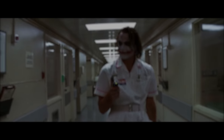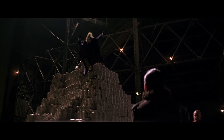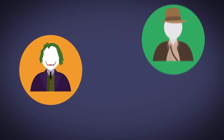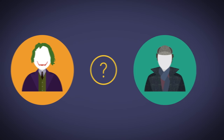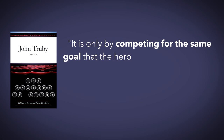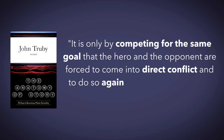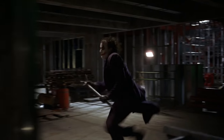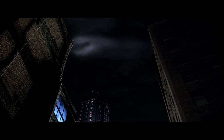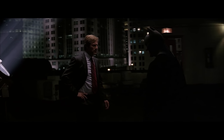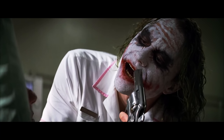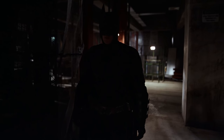Let's look at our final point: competing for the same goal as the protagonist. How do you make sure your antagonist is the right one for your hero? After all, the Joker may be the right antagonist for Batman but completely inappropriate for a different protagonist. Let's go back to John Truby: 'It is only by competing for the same goal that the hero and the opponent are forced to come into direct conflict, and to do so again and again throughout the story.' So how are Batman and the Joker competing for the same goal? Both have their own vision of what they want Gotham City to be. Batman is fighting for hope, for Gotham City without crime, for law and order. And the Joker wants to upset the established order and bring chaos. Batman versus the Joker: law and order versus chaos.